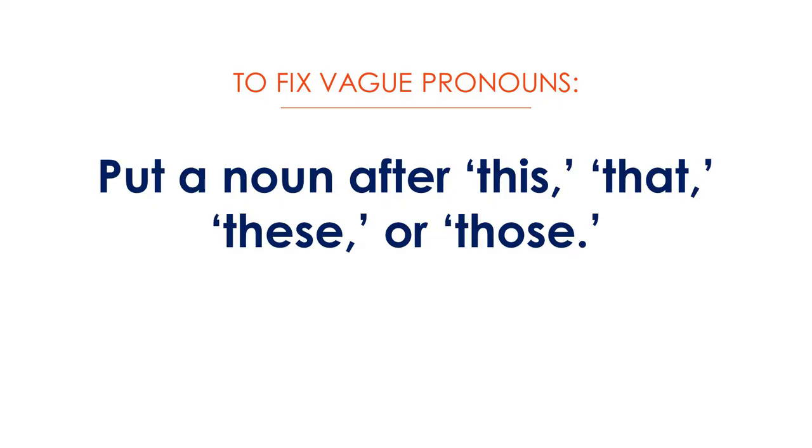A lot of times we use vague pronouns to represent very complex concepts, sometimes even complete sentences — that's just way too much weight to put on a single word. Pronouns are fair game, but you want to make sure there's a one-to-one correspondence between the pronoun and the thing it represents — 'it' for the car, or 'he' for the boy. But when you start burdening a single word with a big concept, that's too much. To fix vague pronouns, simply put a noun after 'this,' 'that,' 'these,' or 'those.'